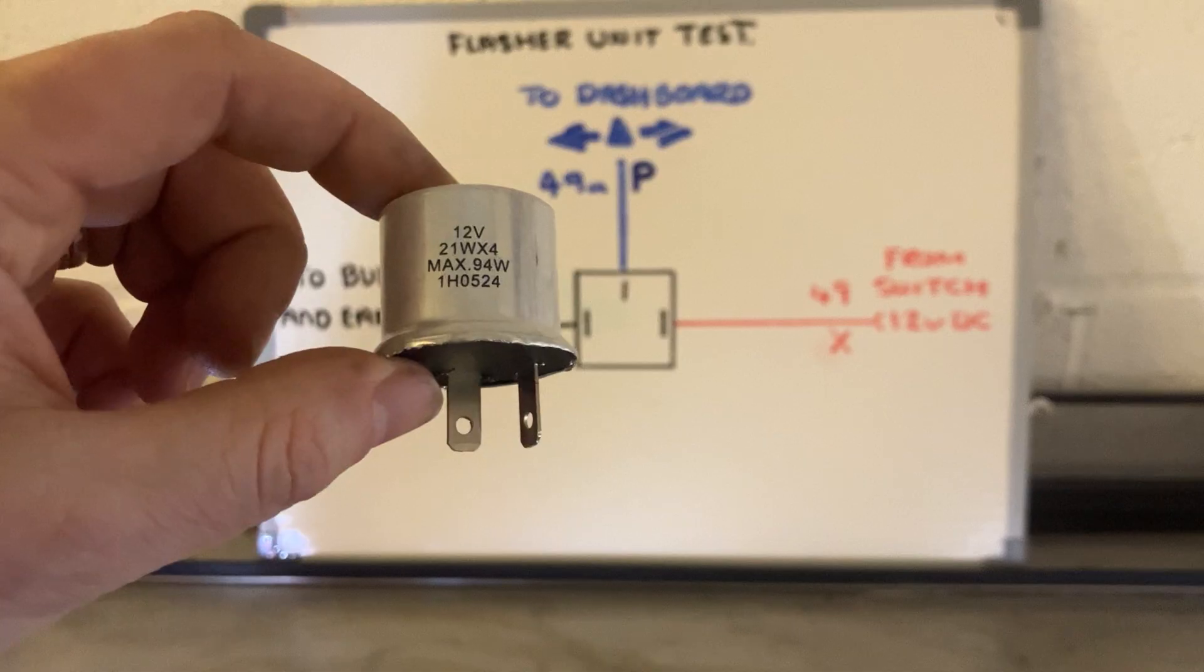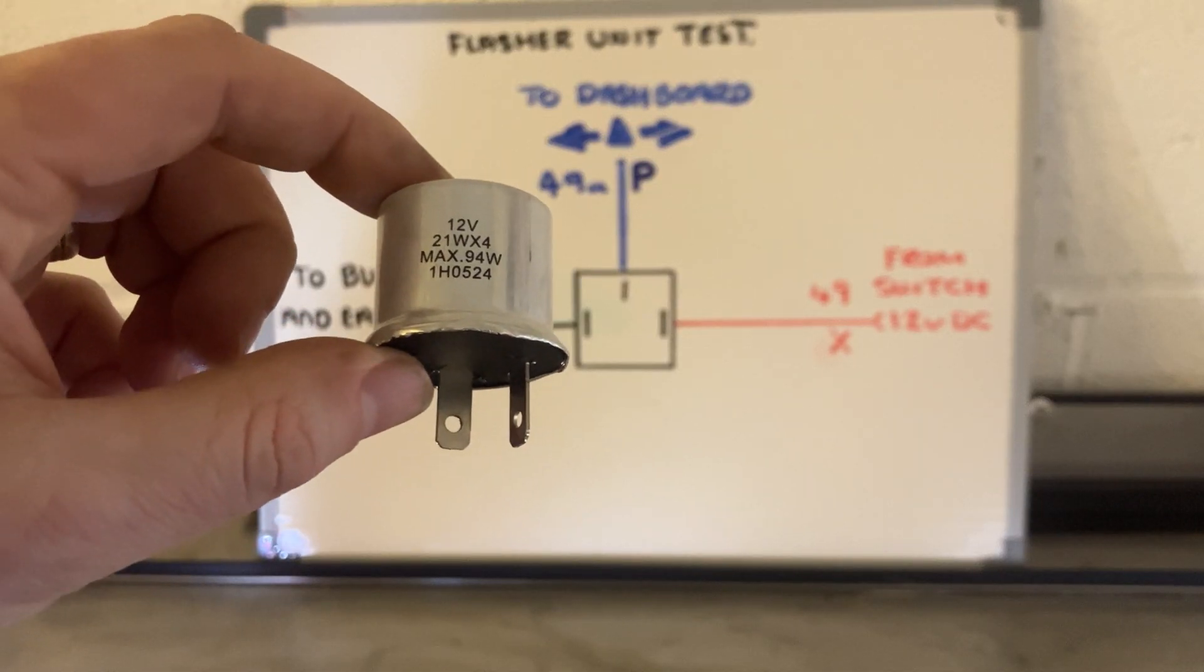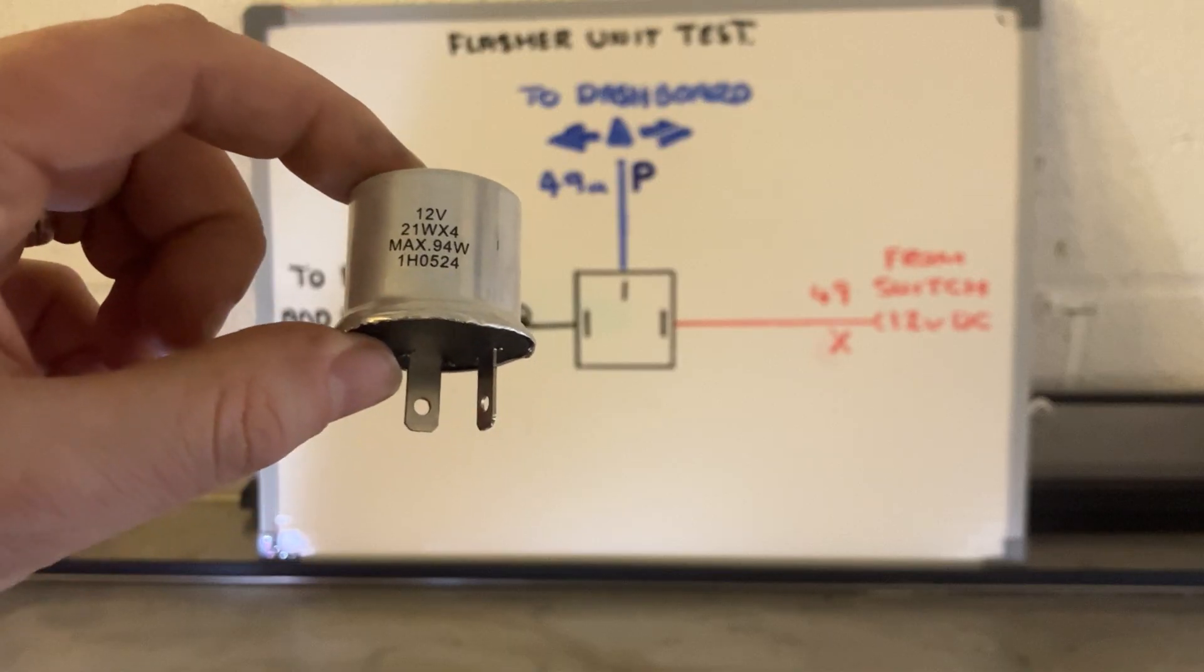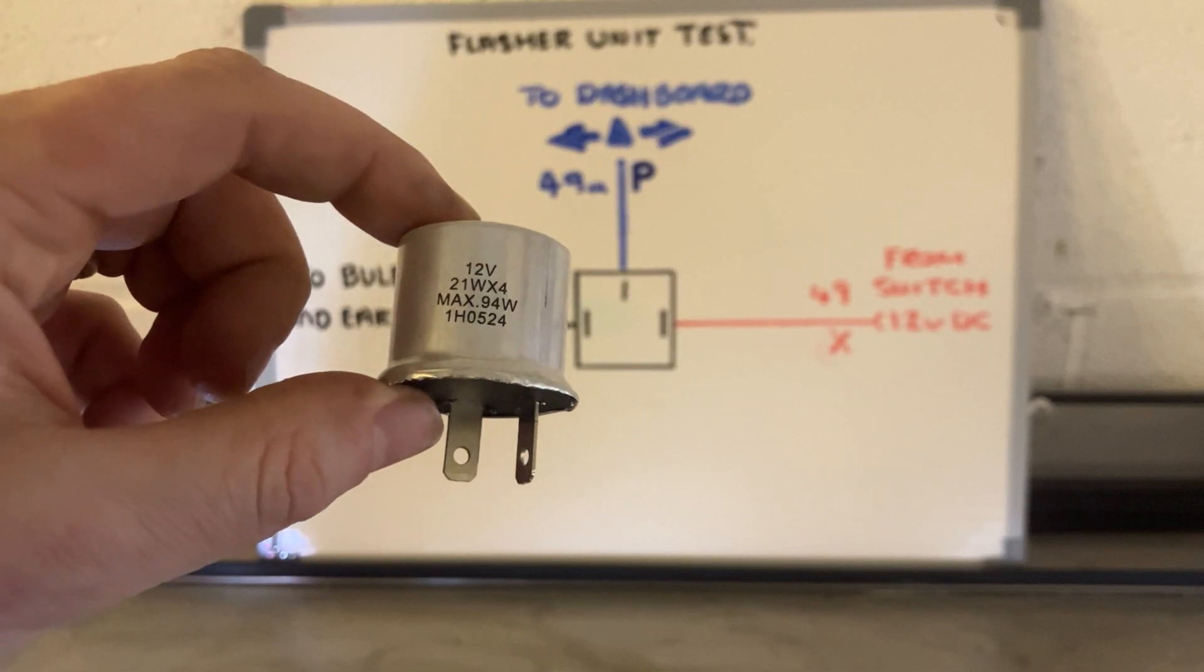So first of all, what is it? It's a mechanical device that turns your indicators on and off. Otherwise, you would have a permanent indicator on. So it's switching gear effectively to make your indicators flash.